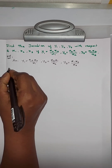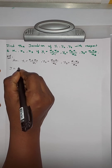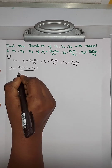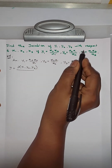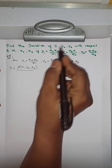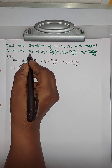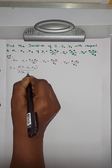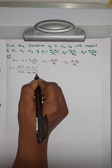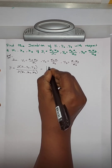The notation for Jacobian is J = ∂(y1, y2, y3)/∂(x1, x2, x3). We should find the Jacobian of y1, y2, y3, which means ∂(y1, y2, y3)/∂(x1, x2, x3).